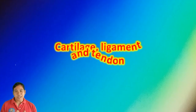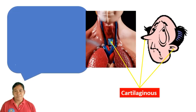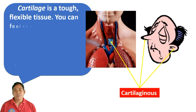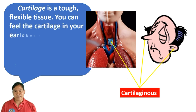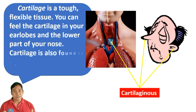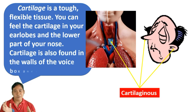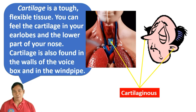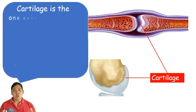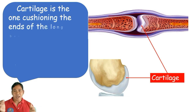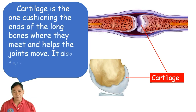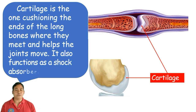Cartilage is a tough, flexible tissue. You can feel cartilage in your ear lobes and the lower part of your nose. Cartilage is also found in the walls of the voice box and in the windpipe. Cartilage cushions the ends of the long bones where joints meet, helping the joints move. It also functions as a shock absorber.